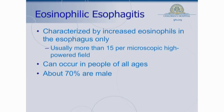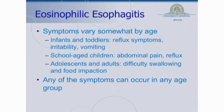EE can occur in people of all ages. It does tend to occur more often in boys or men than girls and women — really by about 2.5 to 3 to 1 ratio, so about 70% of the patients are boys, but we certainly see it in girls as well. The symptoms vary a little bit by age. Infants and younger kids, so toddlers, tend to have more reflux symptoms and some irritability and vomiting. As these kids get older, they may complain more often of abdominal pain, though it may just be that they're able to verbalize it better as they get older.